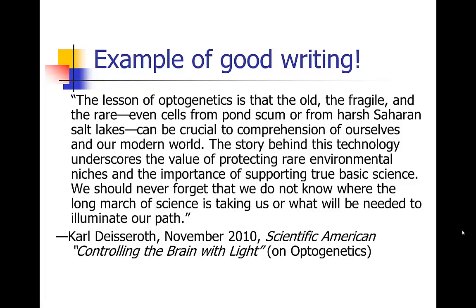He says: 'The lesson of optogenetics is that the old, the fragile and the rare' — notice the use of dashes — 'even cells from pond scum or from harsh Saharan salt lakes can be crucial to comprehension of ourselves in our modern world. The story behind this technology underscores' — I like that verb 'underscores' — 'the value of protecting rare environmental niches and the importance of supporting true basic science. We should never forget that we do not know where the long march of science is taking us, or what will be needed to illuminate our path.' That word 'illuminate' is a little pun, a play on words, because optogenetics is about using light to control the brain. So he got in a nice verb there. That's an example of good writing.